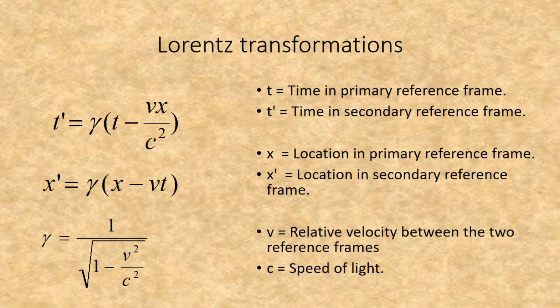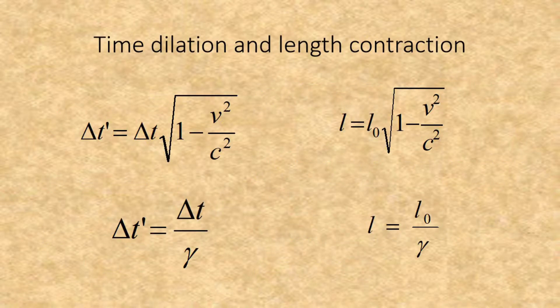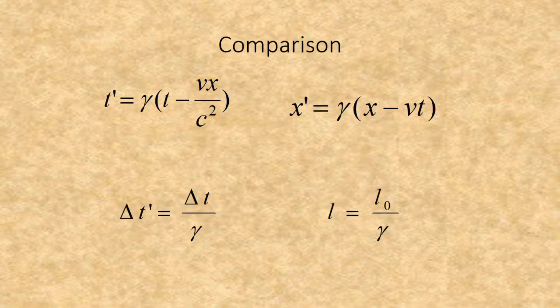Gamma is the adjustment factor between the two reference frames. The actual formula for time dilation is delta t divided by gamma equals delta t prime, and the formula for length contraction is L equals L0 divided by gamma.